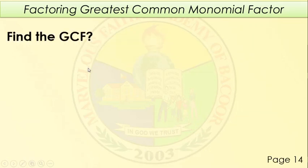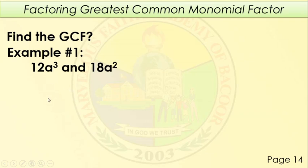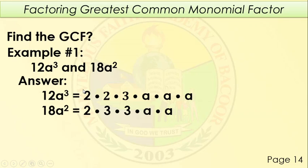Next, find the GCF. Example number 1: 12a cubed and 18a squared. First, kunin yung prime factors ni 12. Ang prime factor ni 12 is 2 times 2 times 3 — kasi 2 times 2 is 4, times 3 is 12. For a cubed, kung ano yung exponent ng variable, yun din dapat yung bilang kapag i-factor mo siya. So a cubed means meron tayong tatlong a: a, a, a.